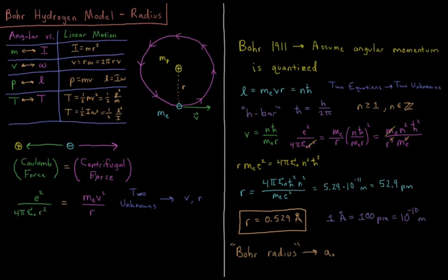This equals the centrifugal force, which for a particle staying constant in a rotating reference frame is going to be mass of the electron times velocity squared over radius.